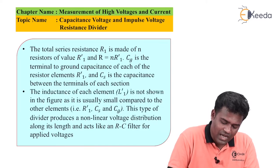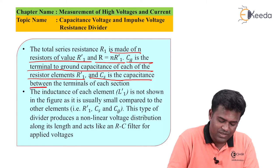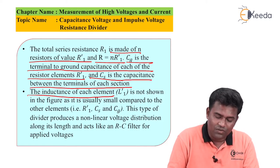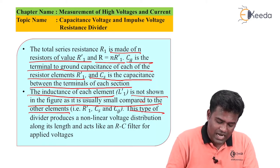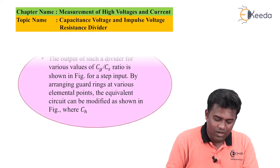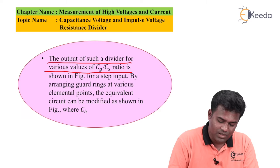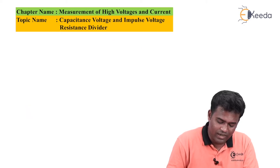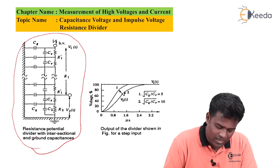The total series resistance R1 is made of resistance of value R1' where R = N × R1'. Cg is the terminal-to-ground capacitance of each resistance element R1', and Cs is the capacitance between terminals of each section. The inductance of each element is not shown as it is usually negligible compared to other elements. This type of divider produces a non-linear voltage distribution along its length and acts like an RC filter for applied voltages.